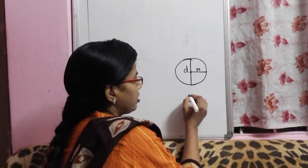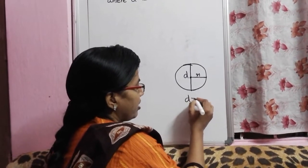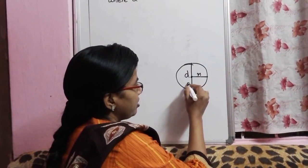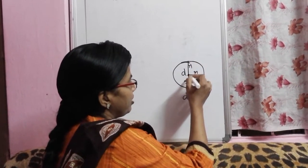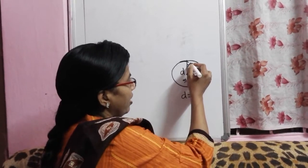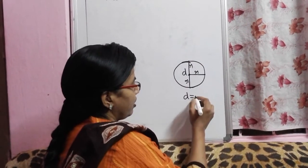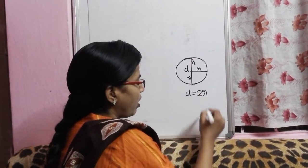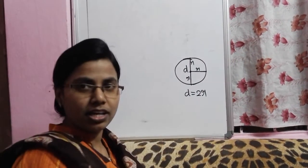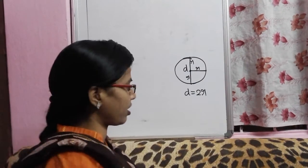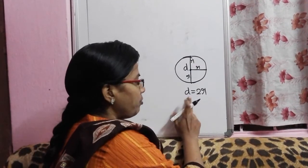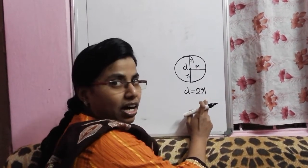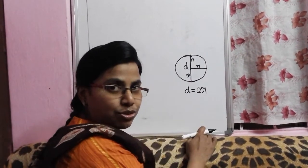This diameter is nothing but this is radius and this is also radius. So, R and R — this is 2R. R plus R is 2R. So, diameter is equal to 2R. Understood this?